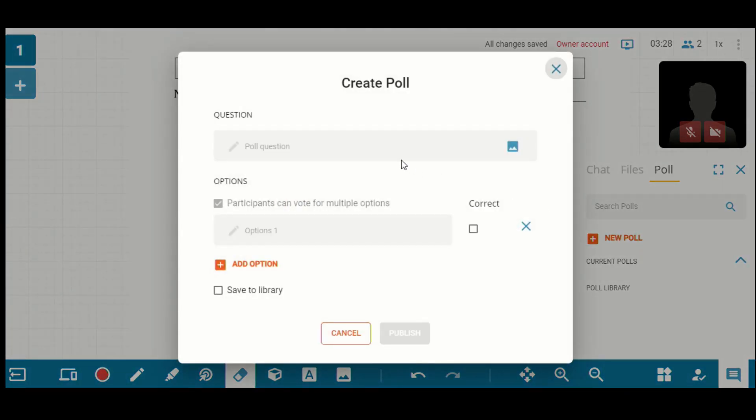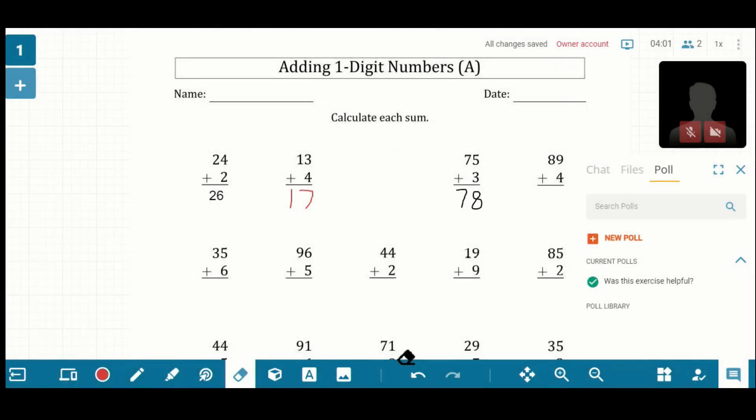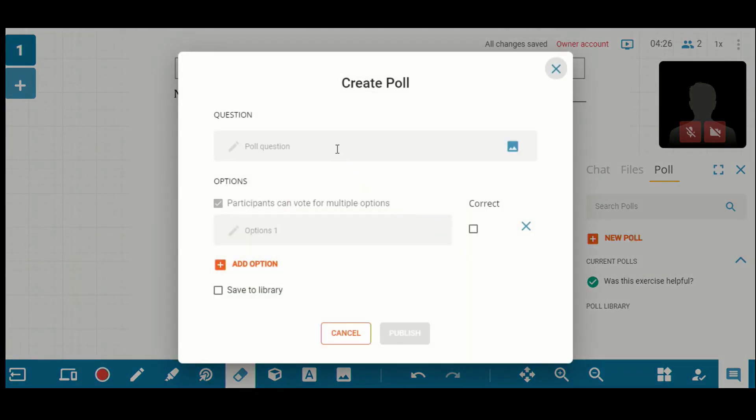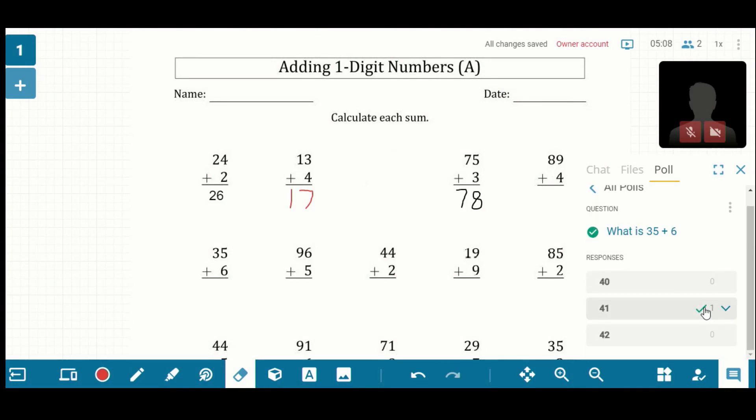And I can create an instant poll. So I can write something like, was this exercise helpful? And I can give them choices and publish that. And then so the students will see on their side, the poll they can answer and submit responses. And then as the host, you can click on it and see what they've responded. You can also create a poll that has correct and incorrect answers. So I can say, what is 35 plus 6? And I can give different options. And then I can choose the correct answer and publish that. And then when I click to see, I can see how many people chose the correct answer and the incorrect answer, as well as who answered which question. So this is really helpful for being able to assess the student's knowledge in real time as you're working with them.